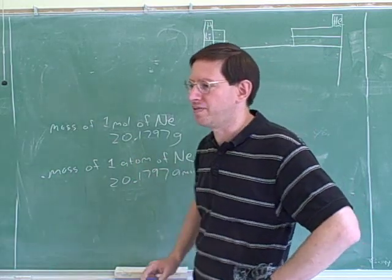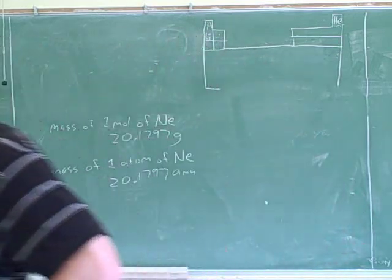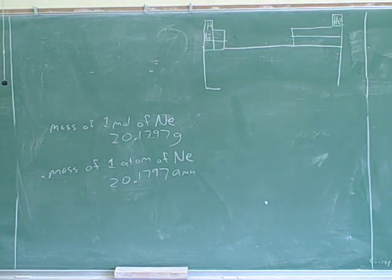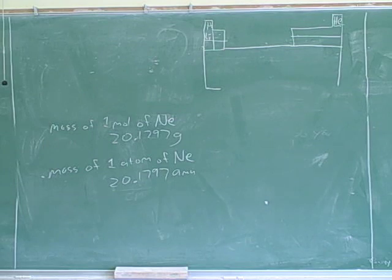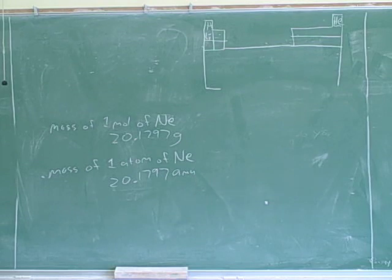Those are very important things to know from the periodic table. All of these mass numbers — in this table, the mass numbers are in the upper left corner. We should think of all of these as either being grams for moles or atomic mass units for atoms. That's an important thing to know.